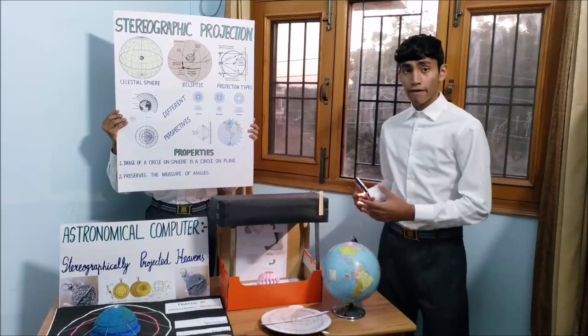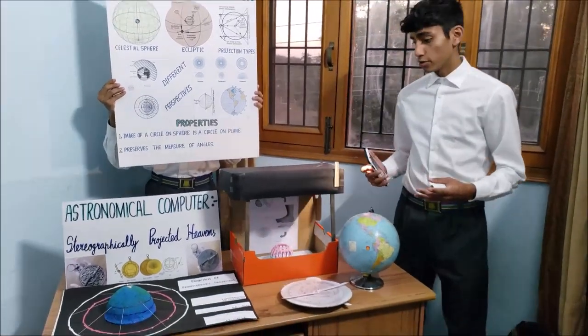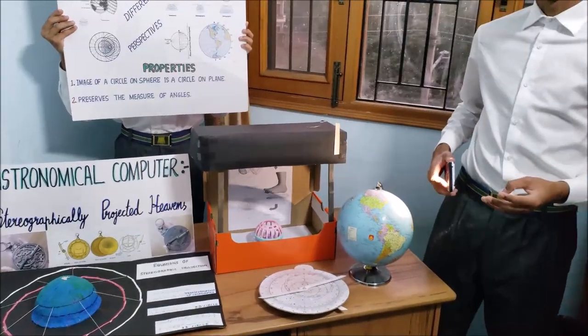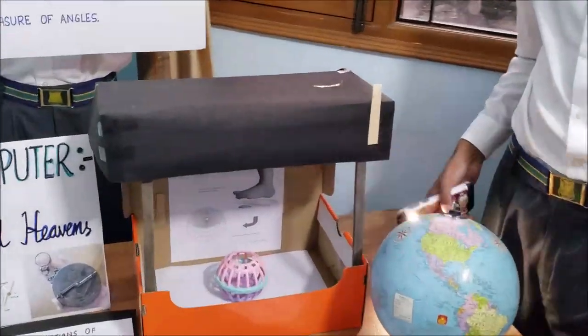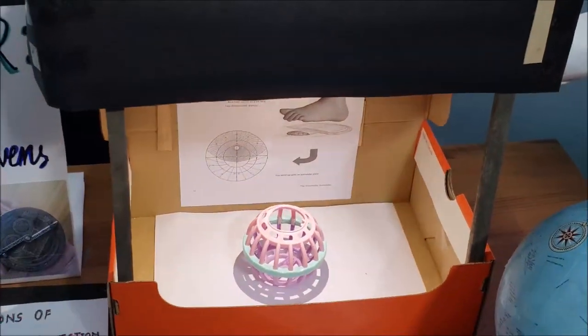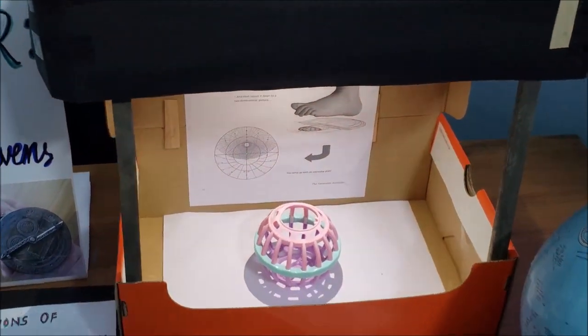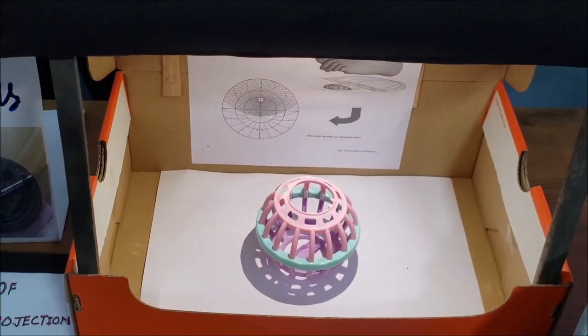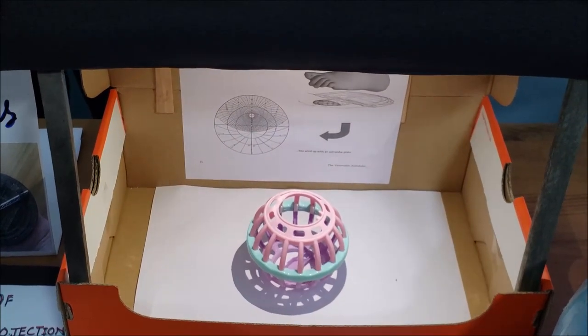So along here with the ball I have a torch with me which I will use to present three different types of projections. The first type of projection is an orthographic projection which is when the source of light is kept at an infinite distance away from the sphere. As you can see the shadow is an orthographic projection.